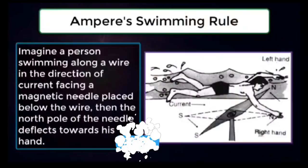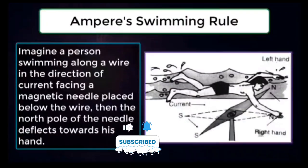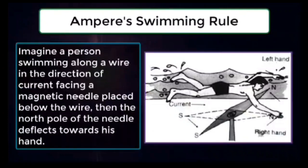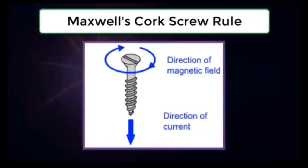Ampere's swimming rule: imagine a person swimming along a wire in the direction of current, facing a magnetic needle placed below the wire. Then the north pole of the needle deflects towards his hands.